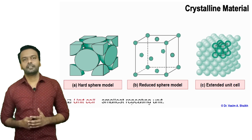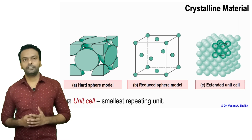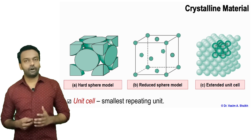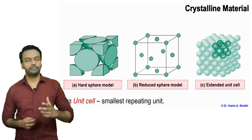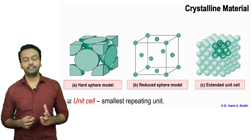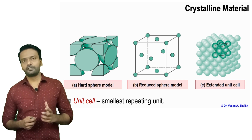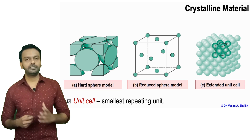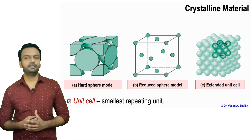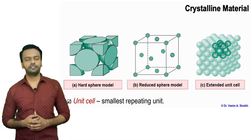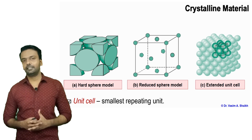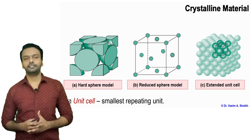Then we have the extended unit cell. As a long range order, the unit cell keeps on repeating itself, and then we get the same material without any grain boundaries. In the upcoming slides we will see the difference between a single crystal material and a polycrystalline material.